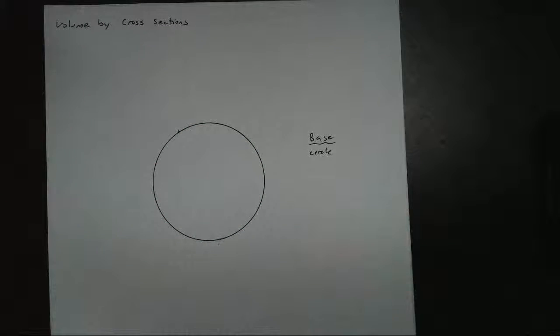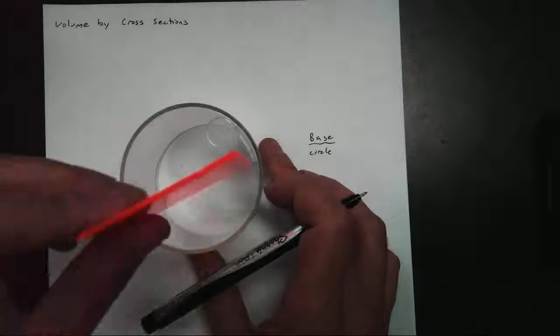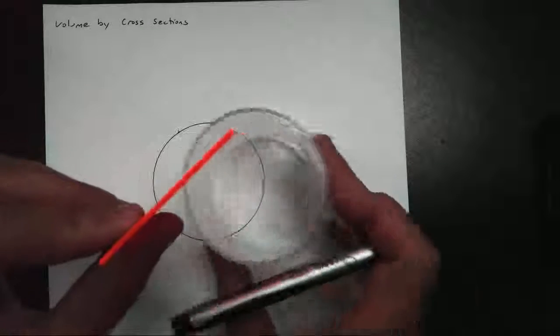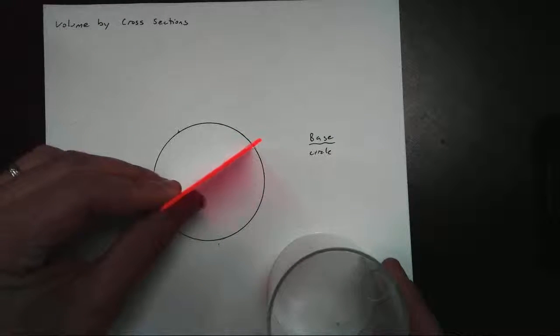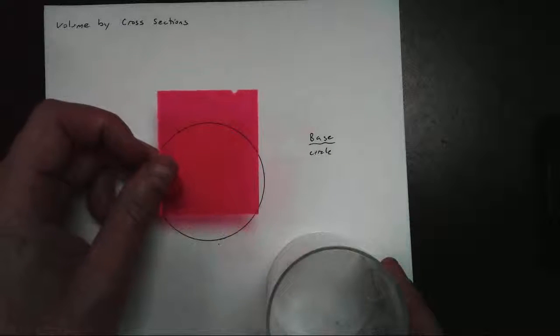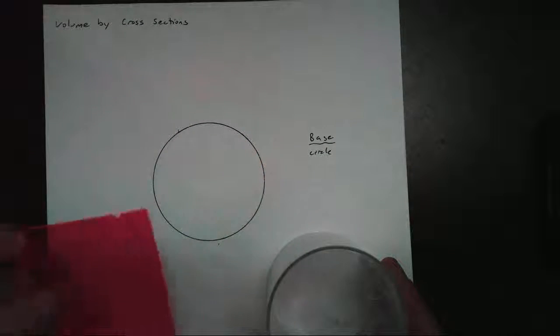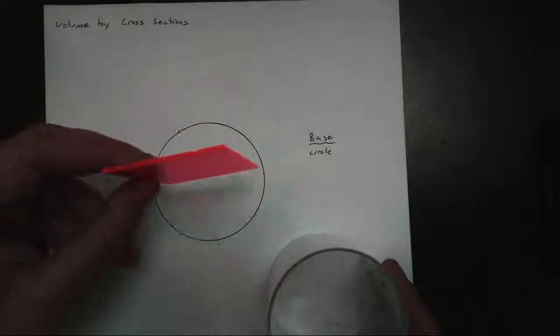Likewise, for a cylinder, here's my cylinder. If I cut my cross-section, in this case our cross-section, turn it profile, is a rectangle. So different bases will give us different shapes depending on what we call the cross-section.